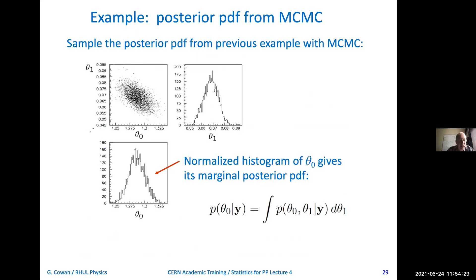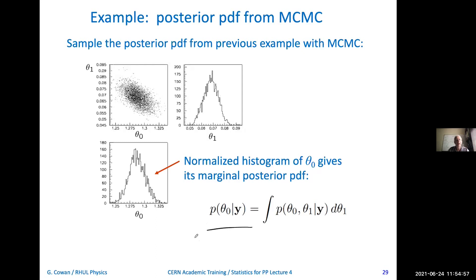Here I've done that with the example we've been discussing: theta_0 versus theta_1. If you look carefully, you can kind of see that these points, particularly out in the periphery, follow a kind of a trajectory because they have to be correlated — the proposed point depends on the previous point. On the other hand, if you just take all of these points and project them onto the theta_0 axis, that gives you my marginal PDF of theta_0. If I normalize that appropriately to unit area, that's my answer — the marginal PDF for my parameter of interest. I'm also allowed to project them onto the axis of the nuisance parameter and get its posterior PDF as well.